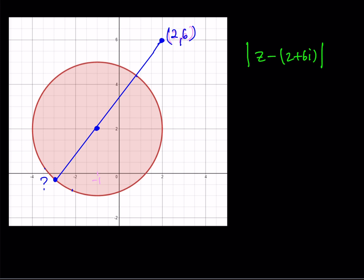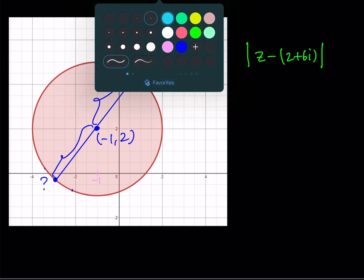We know the center of the circle is at (negative 1, 2). So the idea is: find the distance between (2, 6) and the center (negative 1, 2), then add the radius of the circle to that distance, and that gives the maximum distance.